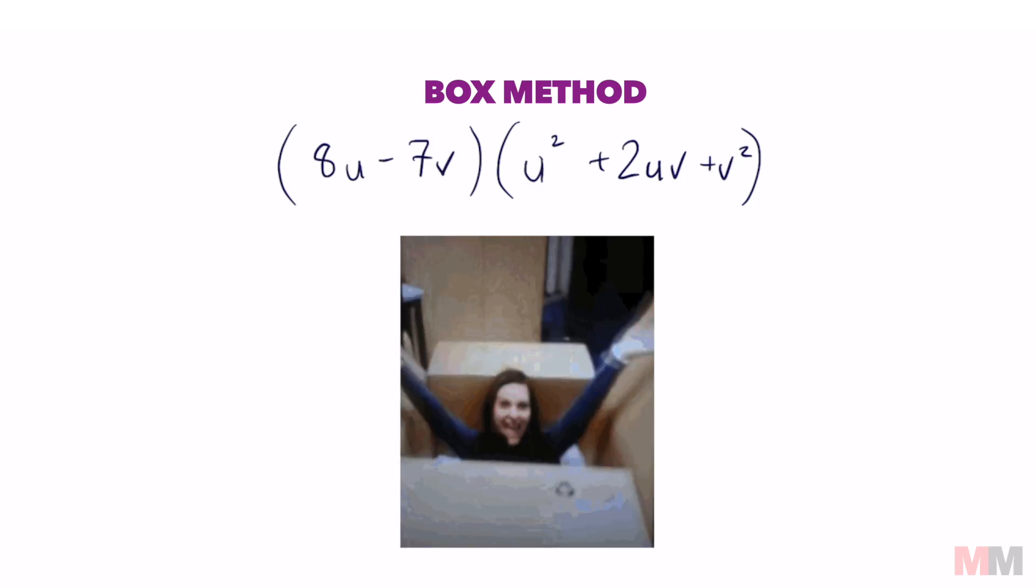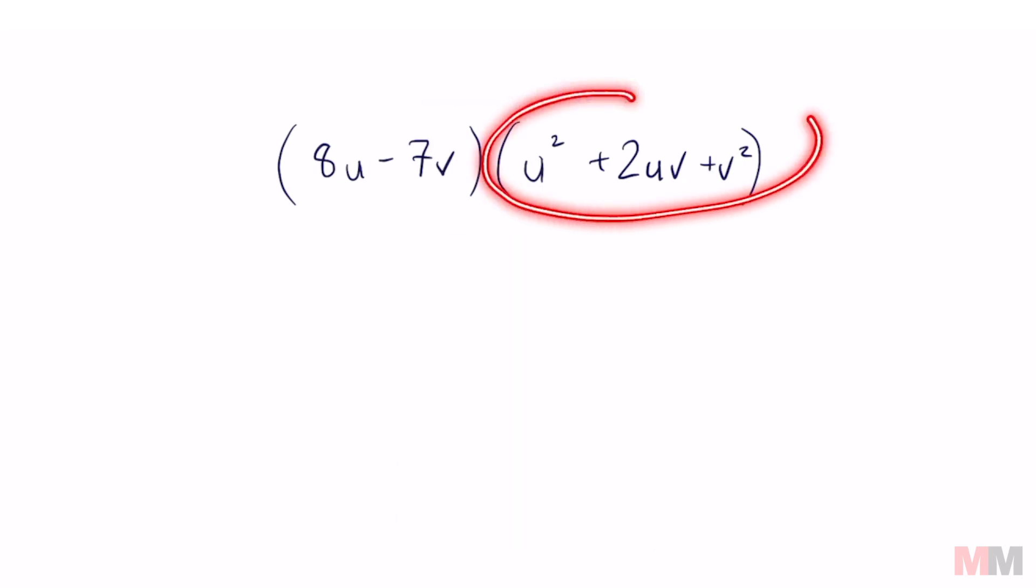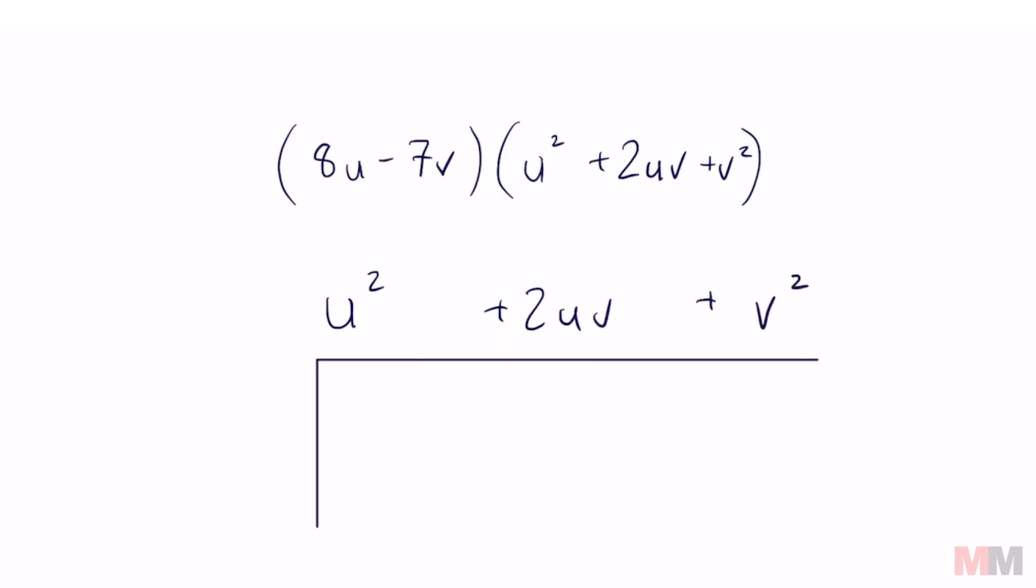This one's called the box method. What you're going to do is pick the parentheses that has the most terms and write that out right above here. u squared plus 2uv plus v squared. You're going to draw a box that looks like this. The other set of parentheses we're going to write on the side: 8u and remember that that is a negative 7v. You're going to split these up into boxes like this so that's going to be a 2 by 3 box. Basically there's one space for each term on the top and on the bottom.